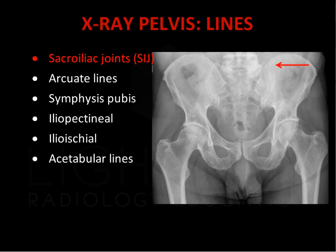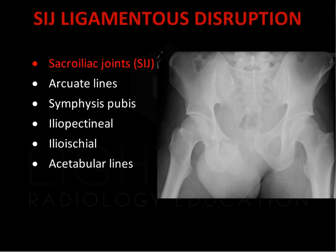Once the rings have been assessed, the pelvic lines need to be assessed. The first of these is the sacroiliac joints. These should have parallel alignment, with the joint space measuring less than 3 mm. Disruption of the sacroiliac joints can occur in trauma involving the main pelvic ring, resulting in diastasis.